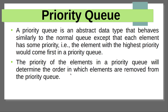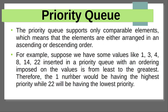The first entering element will be removed first. Here is an example: 1, 3, 4, 8, 14 and 22 — there are 6 elements in the priority queue. These elements are arranged in the form of ascending order. First, 1 is entered and it will be processed. The 22 is the lowest priority and it will be processed last.